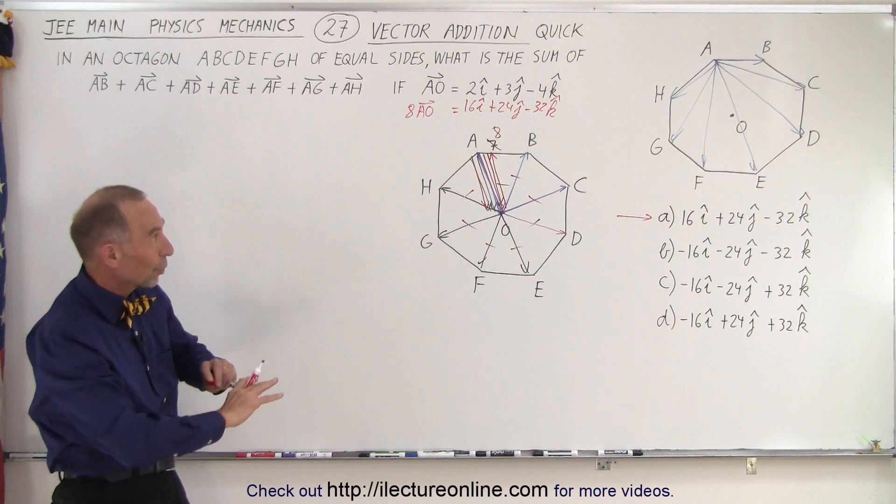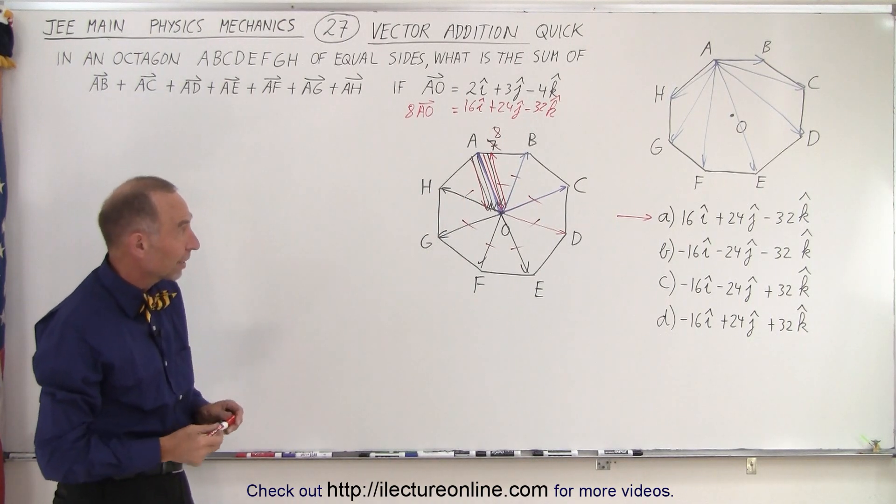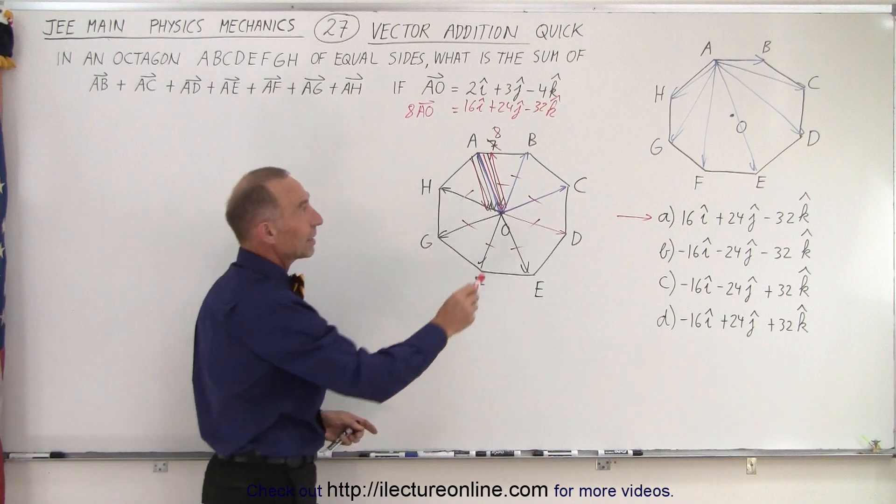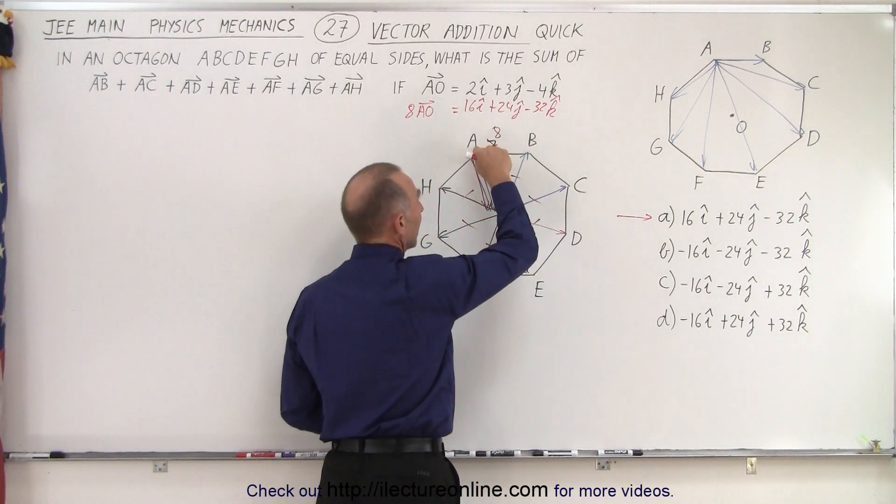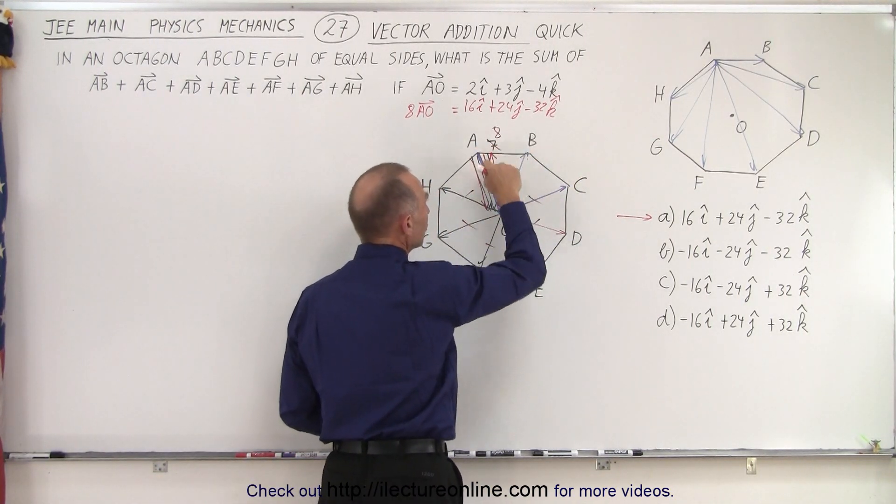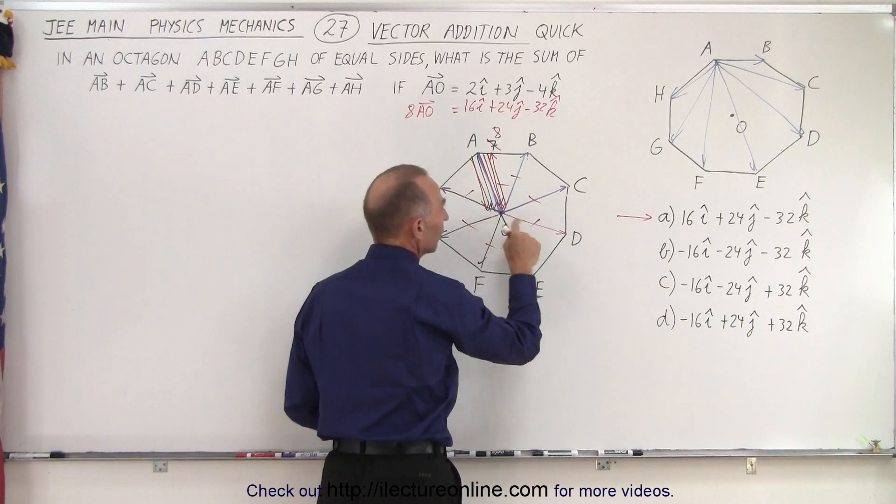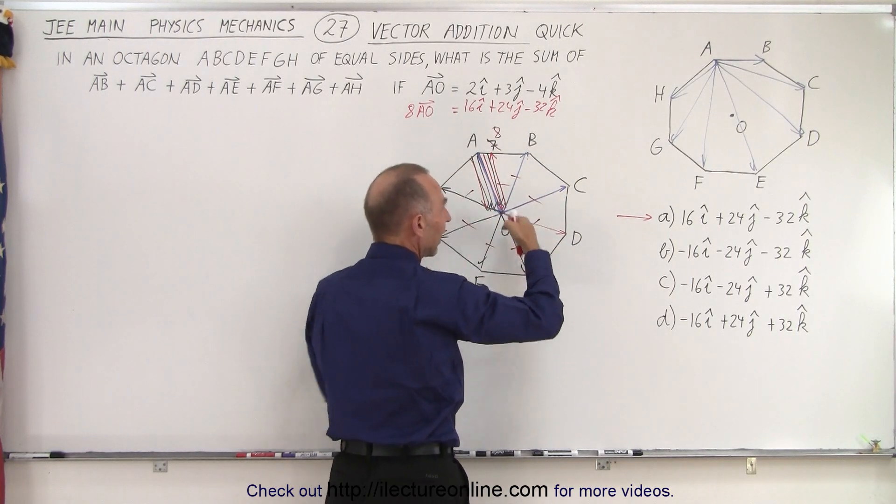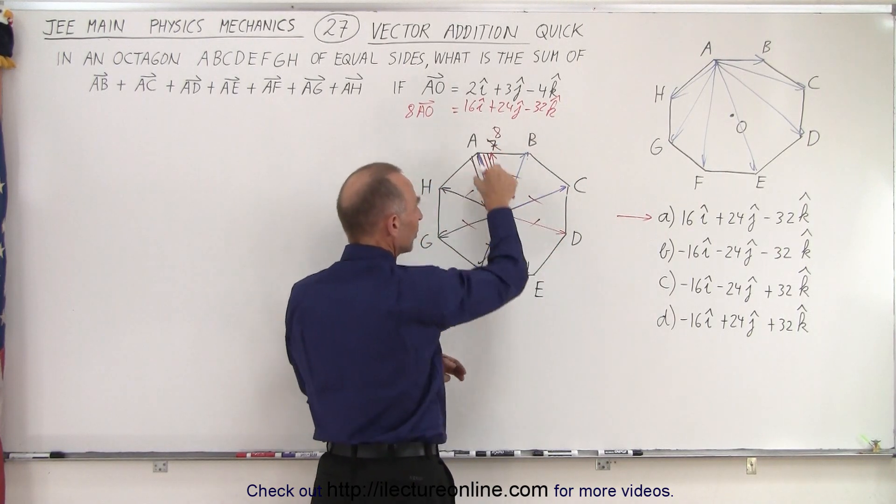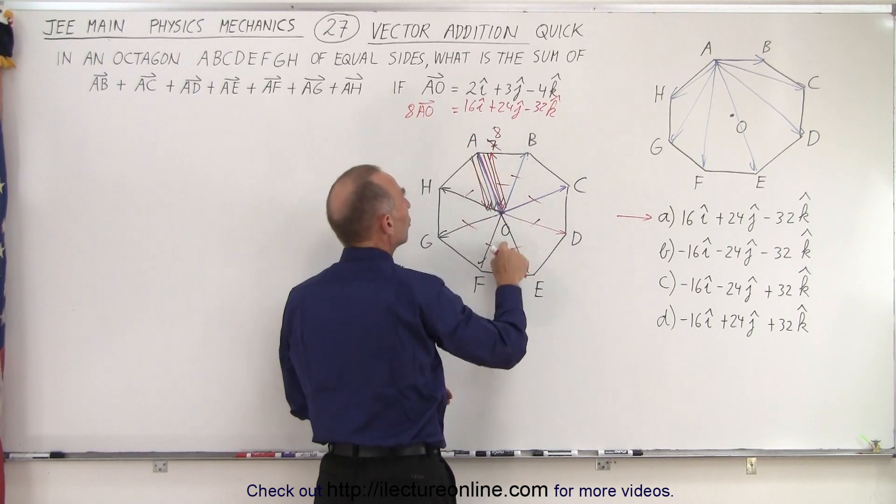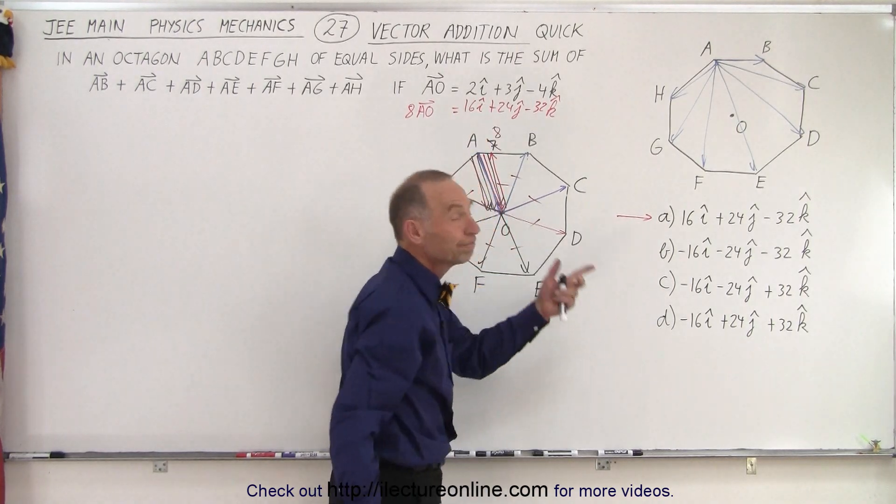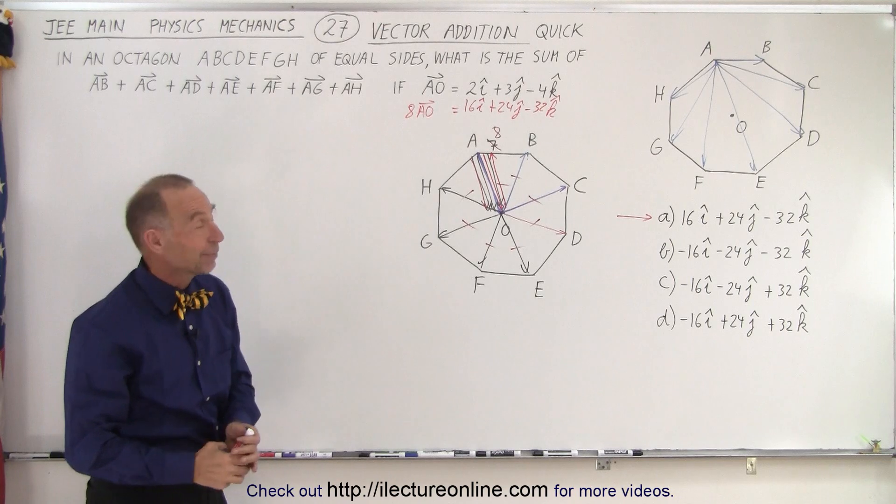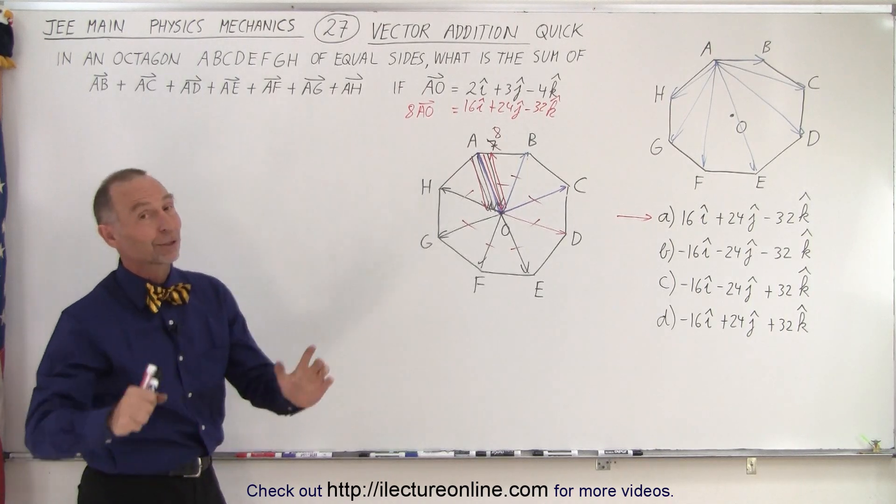So very quickly, without going through all the mathematics, you can simply realize if I just break down each of the vectors into a vector from A to origin and down to B, A to origin to C, A to origin to D and so forth, I can cancel all these vectors out and end up with eight vectors going from A to O. Eight times this gives us that, and there's the answer. And that can be done a lot quicker than trying to work it all out.